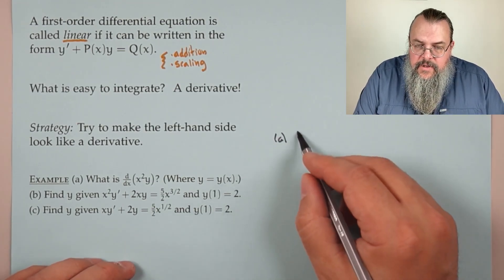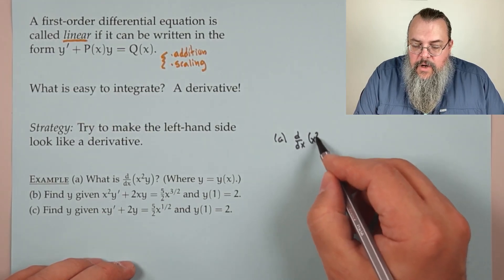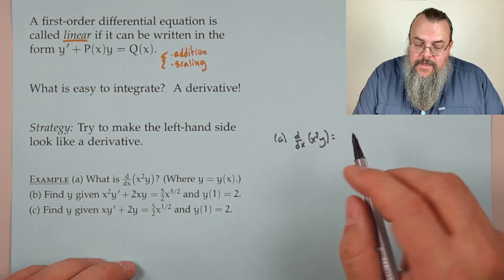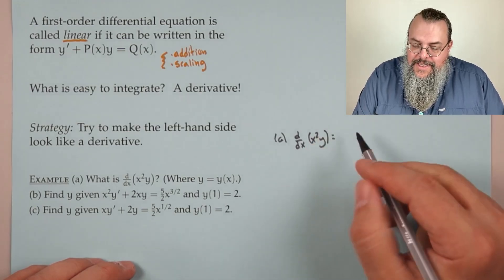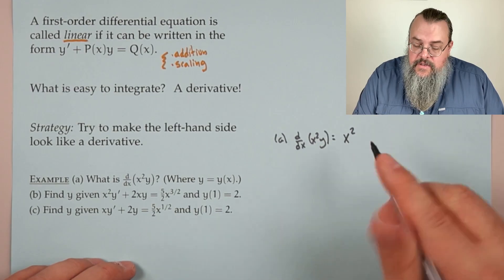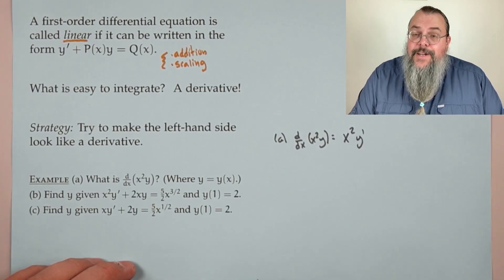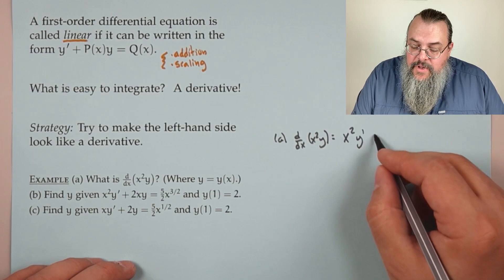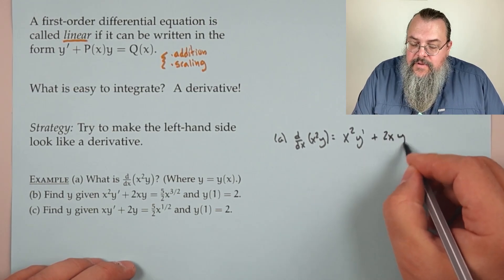For part (a), the derivative of x²y is: the first function x² times the derivative of the second, which is y′, plus the derivative of the first — which is 2x — times the second, y.